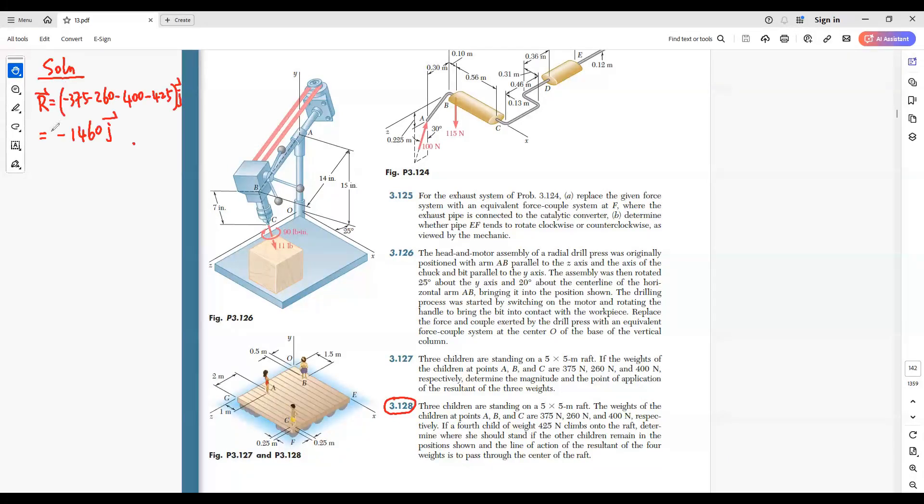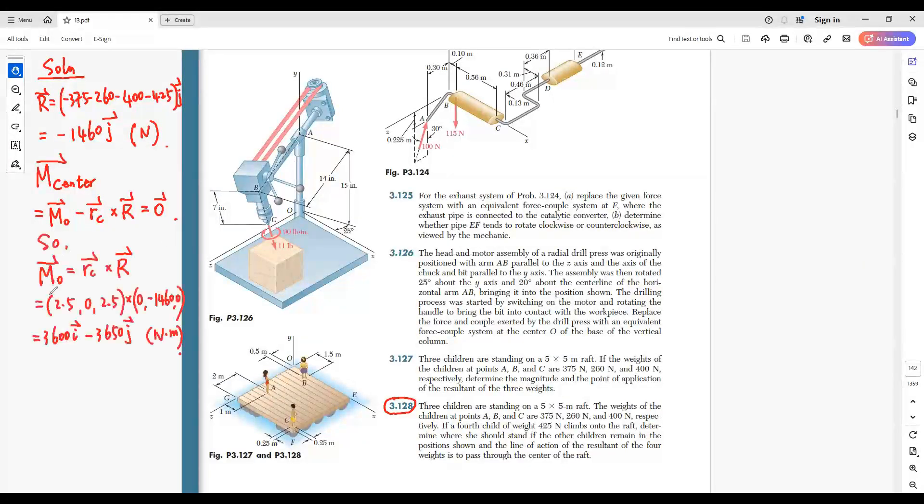Solution. The force given by the weights of the four children is given by this one. We have this formula for the moments. So, we get the moment M0 given by this one.